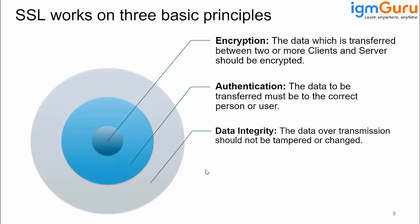SSL or TLS works on three principles: encryption, authentication, and data integrity. Encryption means data is encrypted and transferred over the network between client and server. Authentication means the data is being transferred to and from the right person, and that has to be validated. Data integrity means whatever data is transmitted to the receiver has not been tampered with or changed by a third party, such as a hacker or intruder. These three principles are involved whenever we talk about TLS or SSL.